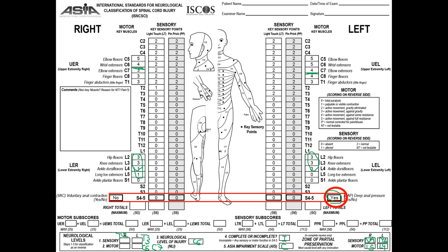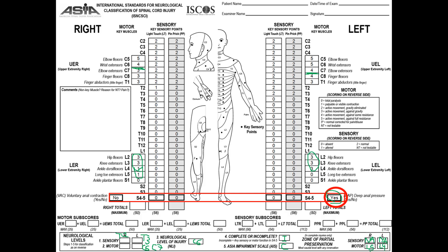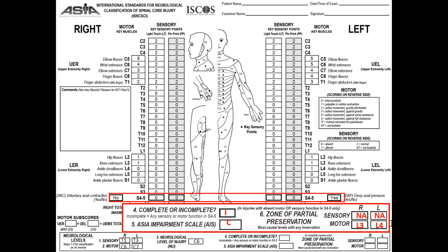Let's check our answers on the next slide. It's incomplete ASIA C. We did not specify the sensory zone of partial preservation, but we did the motor. I got L3/L4 wrong on my answer sheet — it is actually L5. I need to fix that; for some reason I missed those last two. So the correct answer is L5. With that, I hope it is now clear when we have ASIA A and when we need to specify the zone of partial preservation.